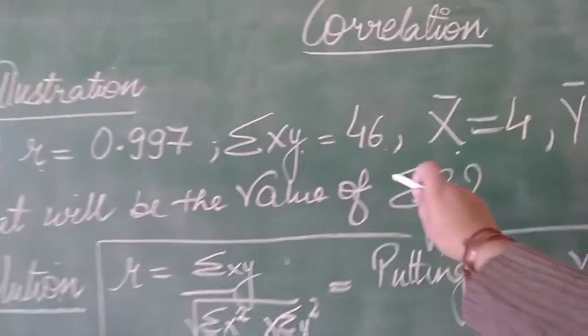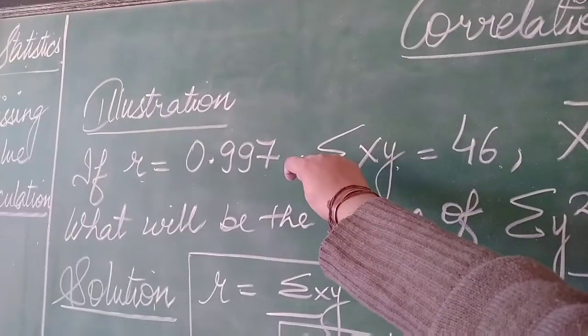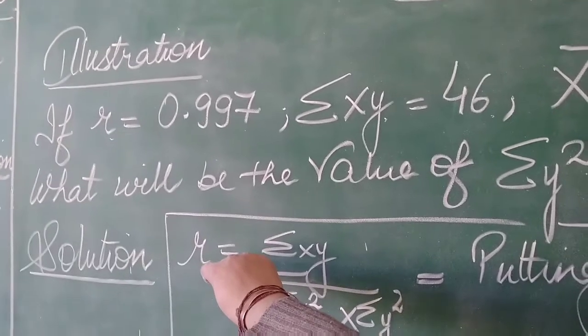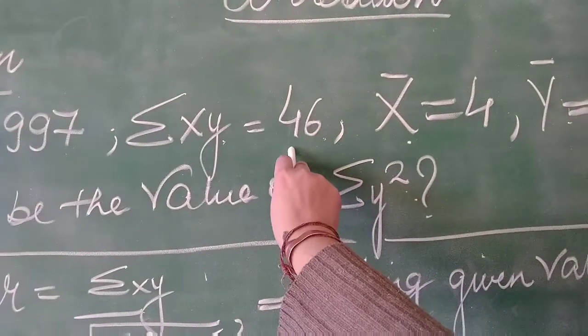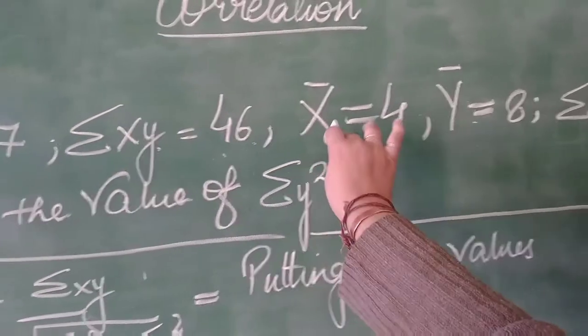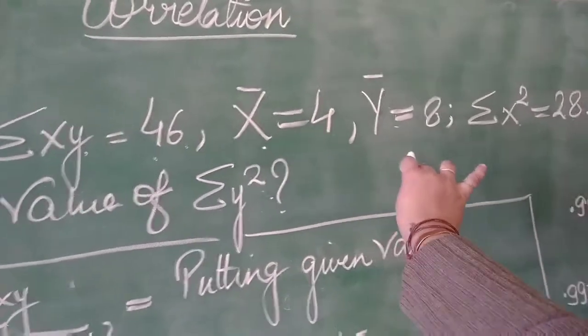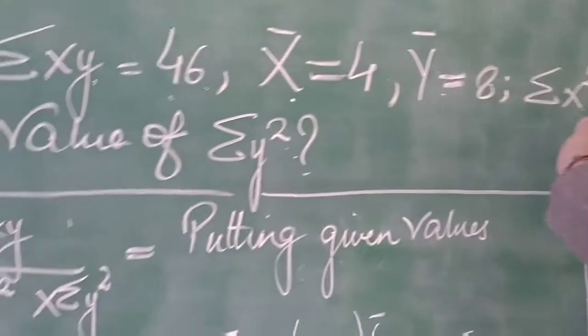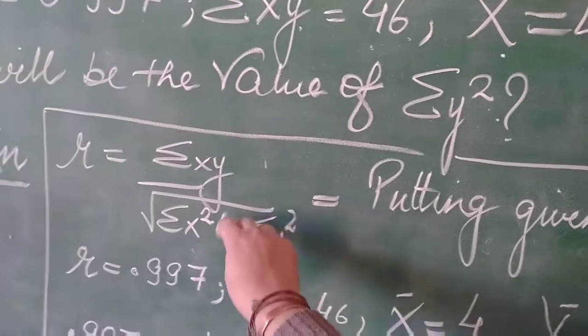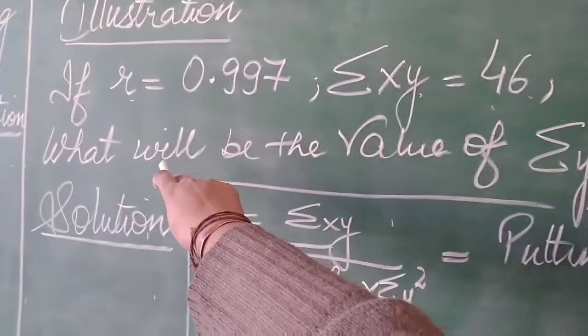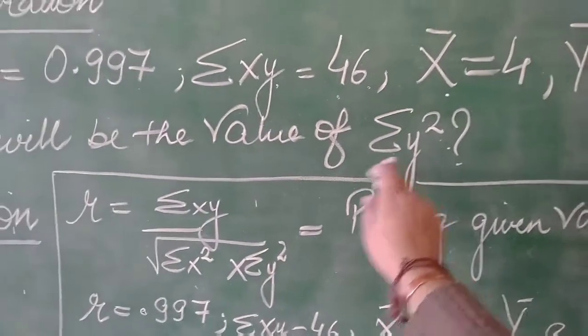Our value summation xy is given, 46. We don't need x bar and y bar, but x square is given 28. We don't have y square value, we have to calculate this value. So we are asked about y square only.